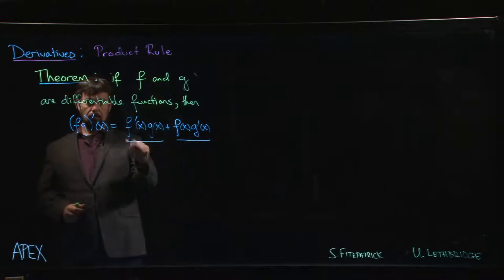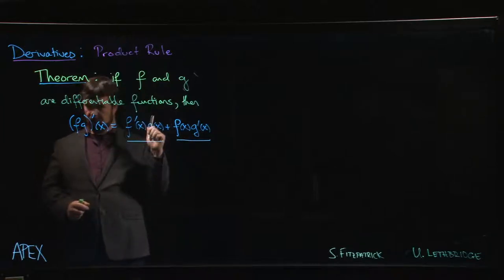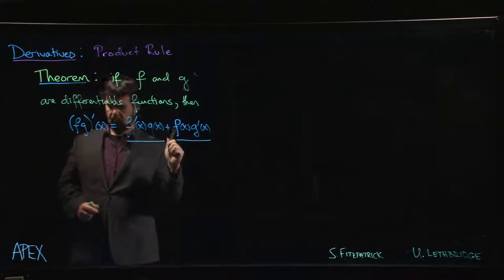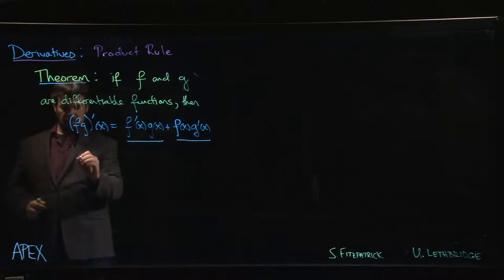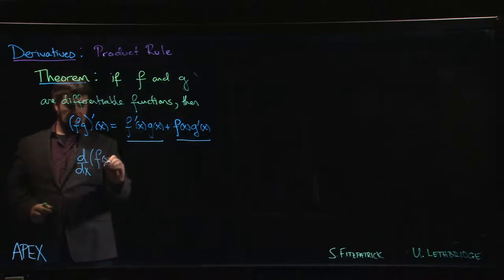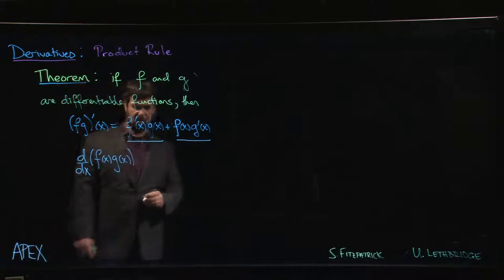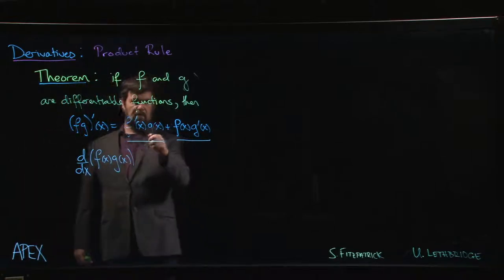Another way you'll see this written is using Leibniz notation, or we could mix the two notations. So the derivative of f(x) times g(x) is going to be f prime times g plus f times g prime.